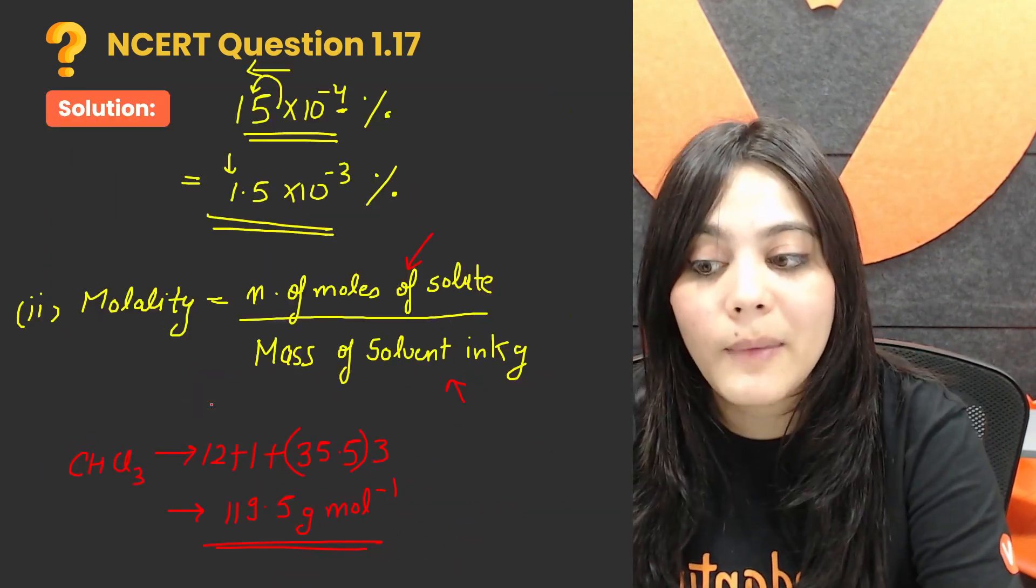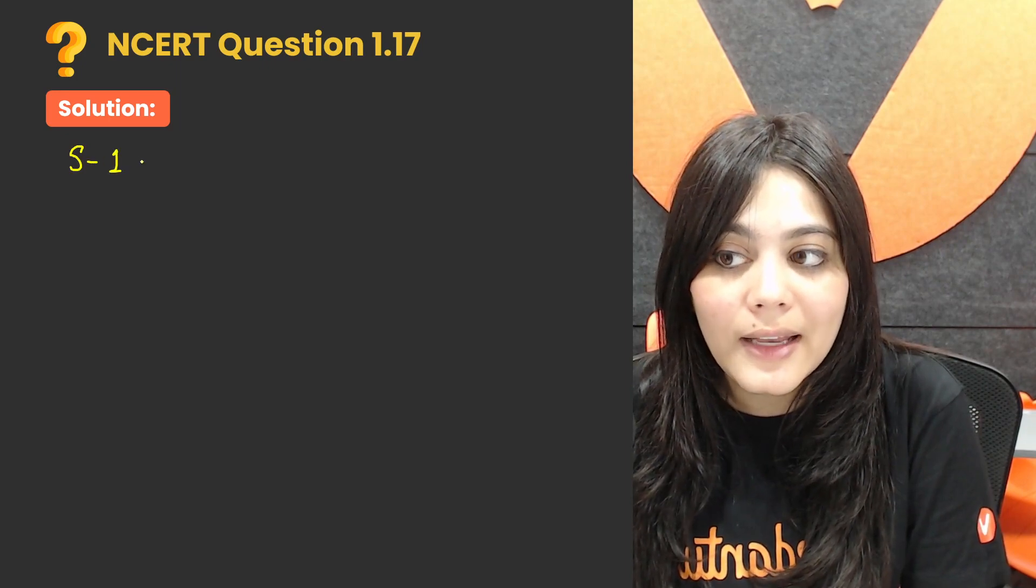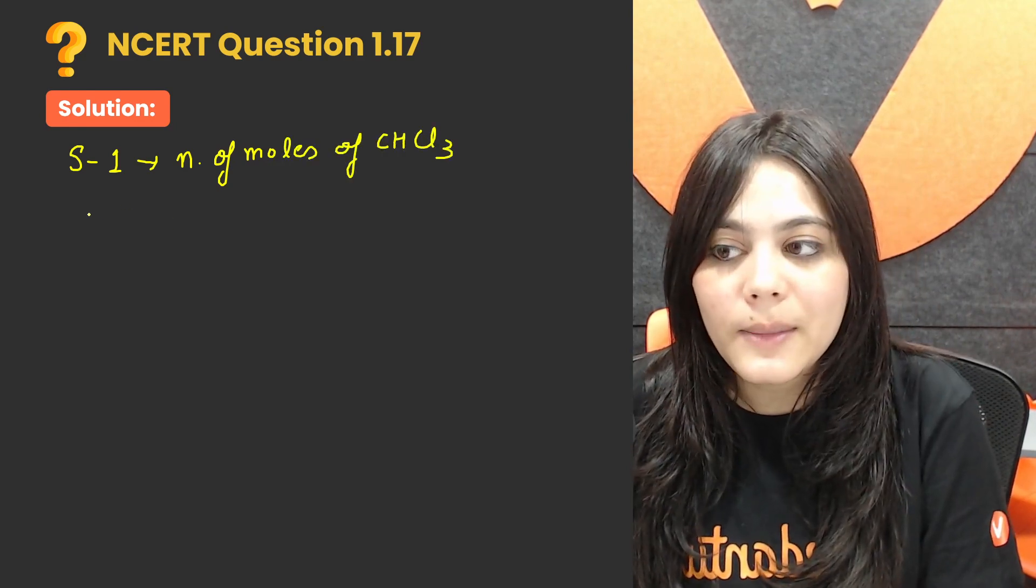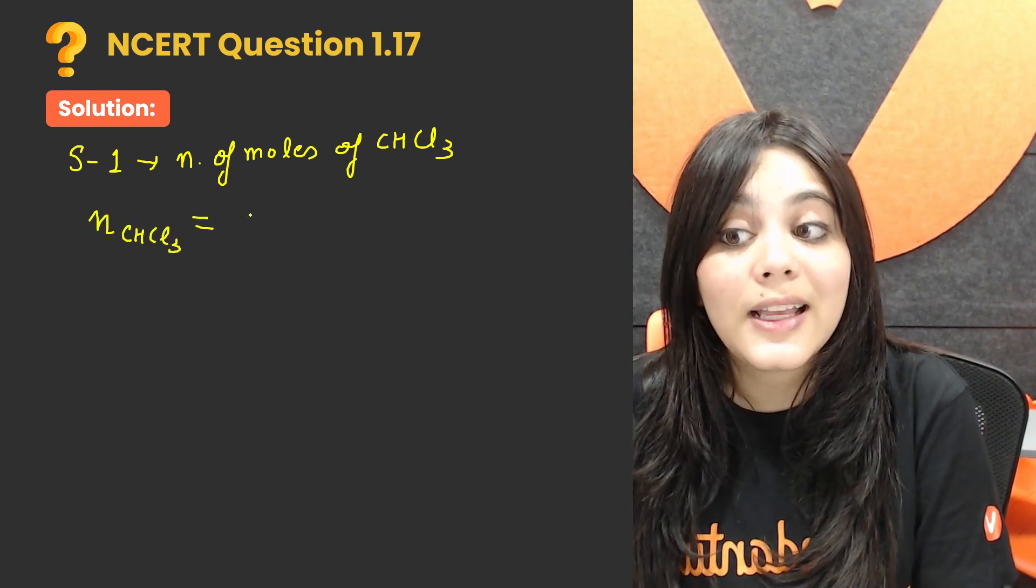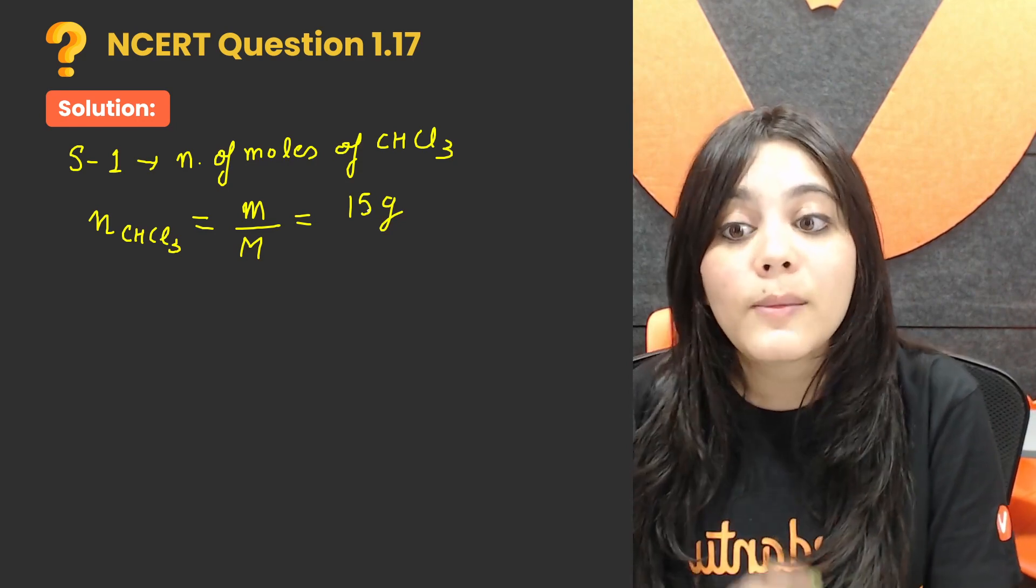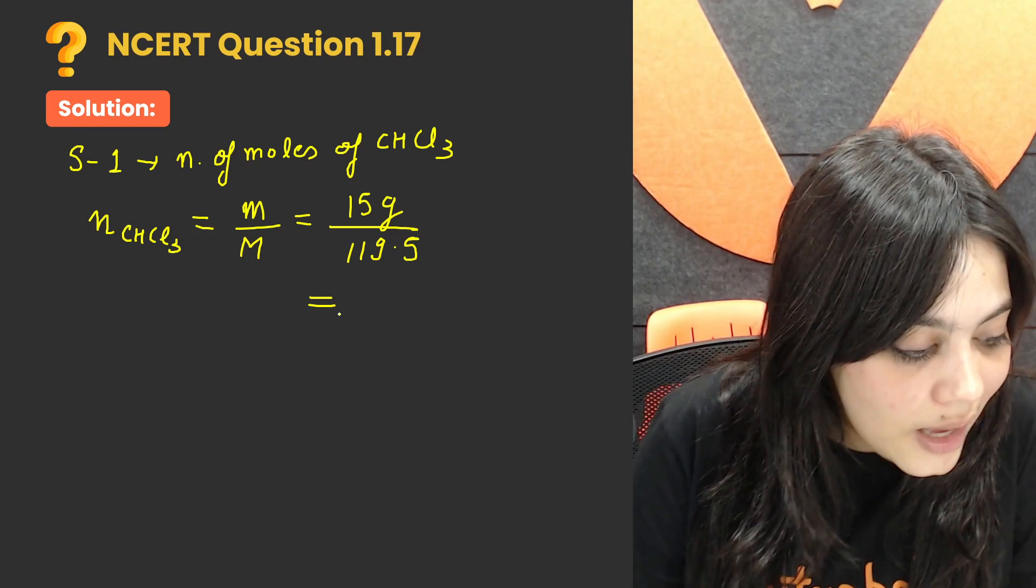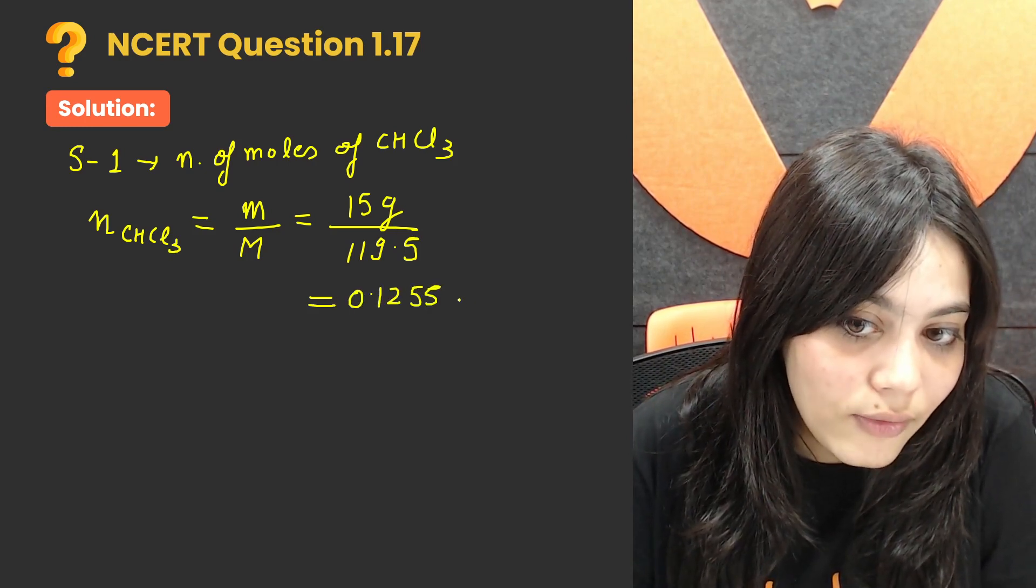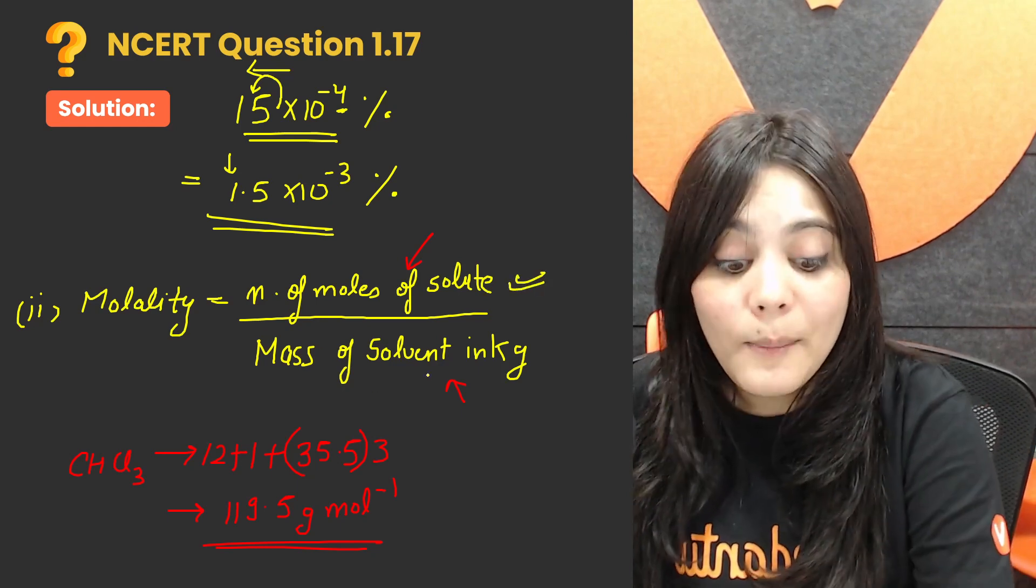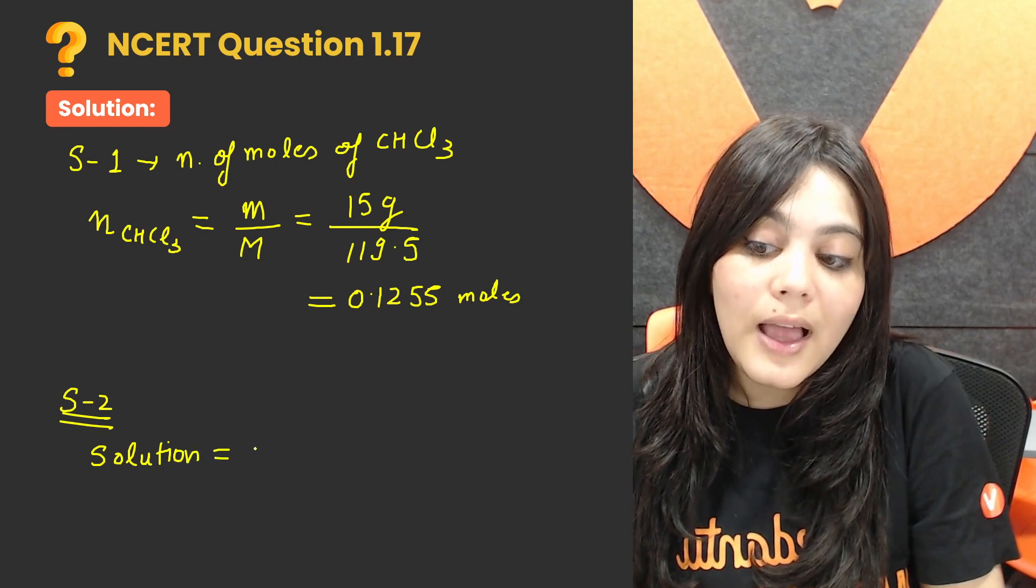Now chloroform molar mass I know, and there is 15 gram chloroform, so can I get number of moles of chloroform? Very easy. So step one, for molality we need number of moles of chloroform. Number of moles of CHCl3 is given mass upon molar mass. Given mass was 15 gram and molar mass was 119.5, which gives 0.1255 moles.